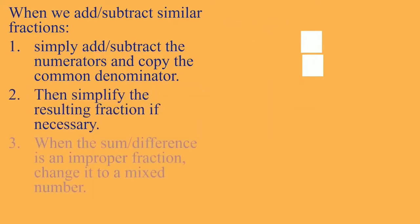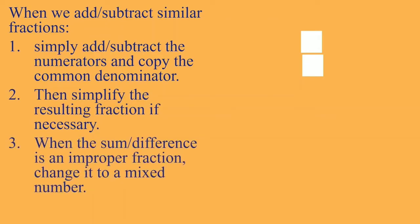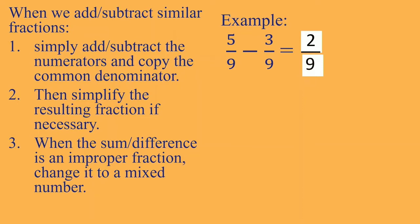Next example — the same steps, but for subtraction. We have 5 over 9 minus 3 over 9. Subtract the numerators: 5 minus 3 is 2. And then copy the denominator 9. Do we need to simplify that one? No, because 2 and 9 have no common factor except 1. So 2 over 9 is our final answer.